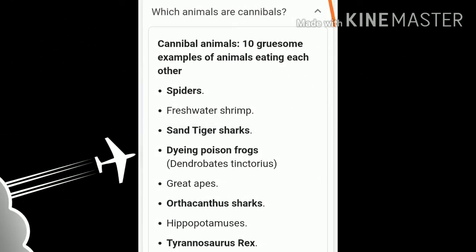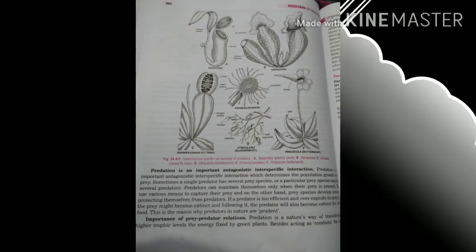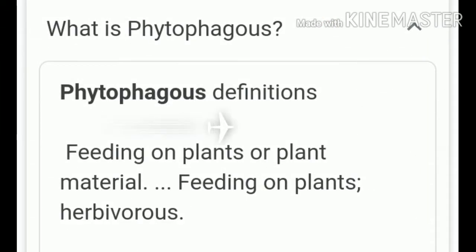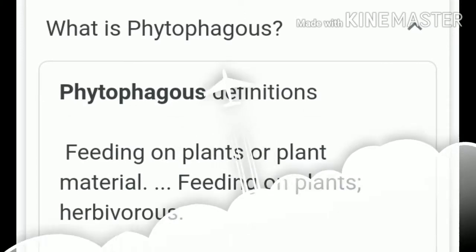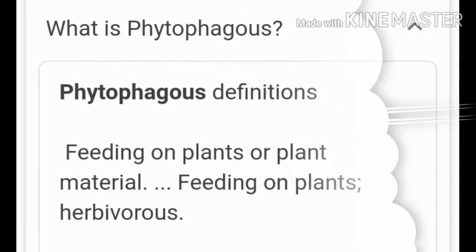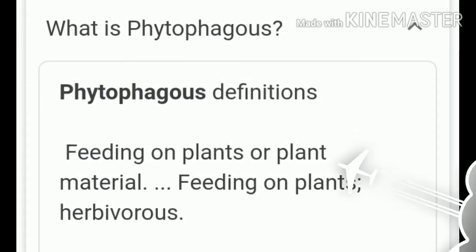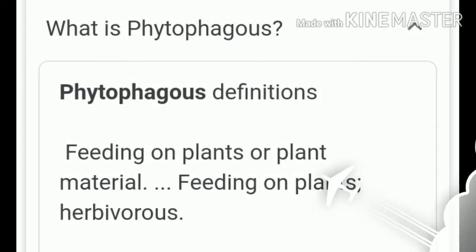For plants, herbivores are the predators, since they eat plants. Nearly 25% of all insects are phytophagous, feeding on plants. Since plants cannot run away from their predators, they develop a variety of morphological and chemical defenses against herbivores.